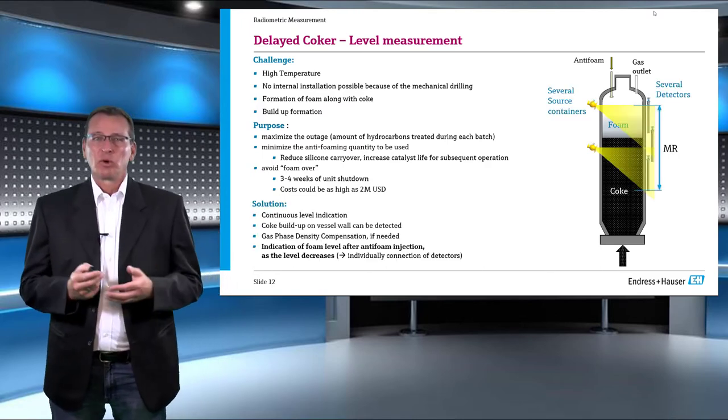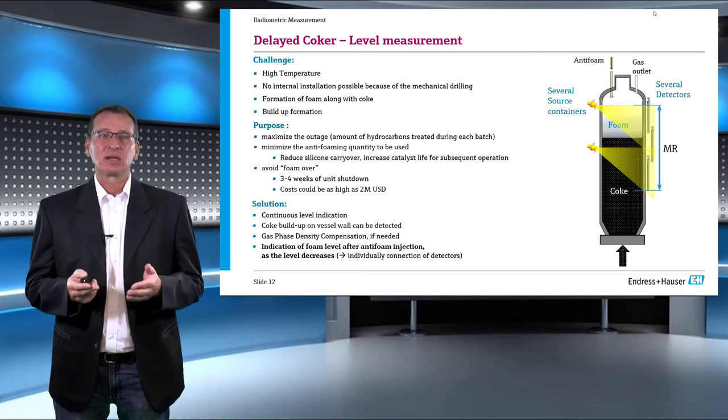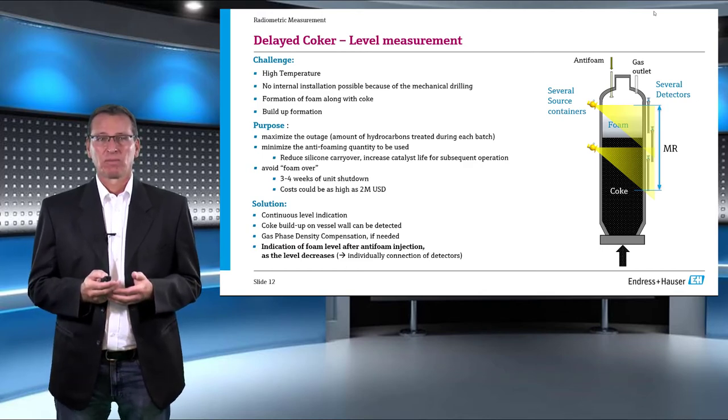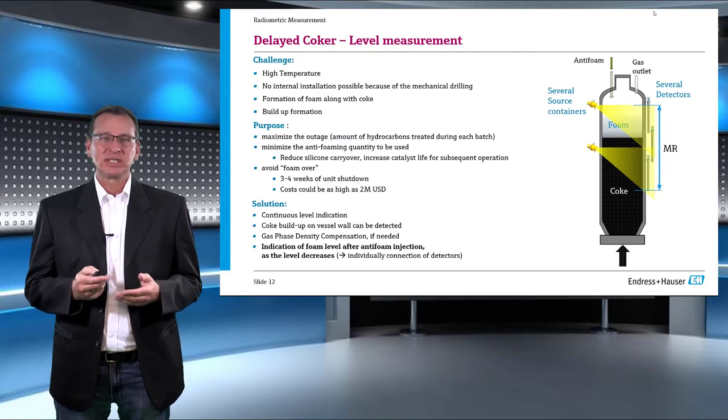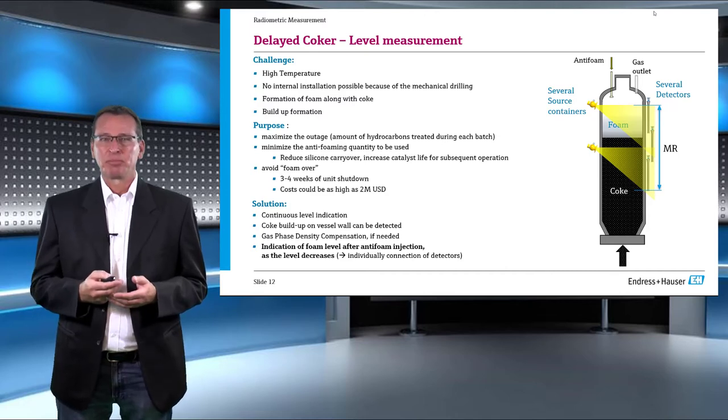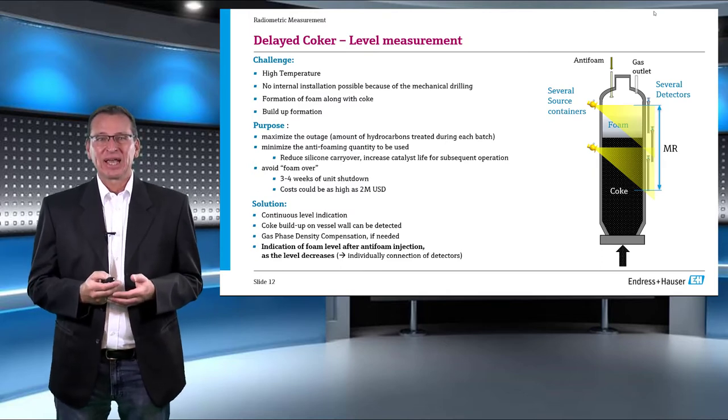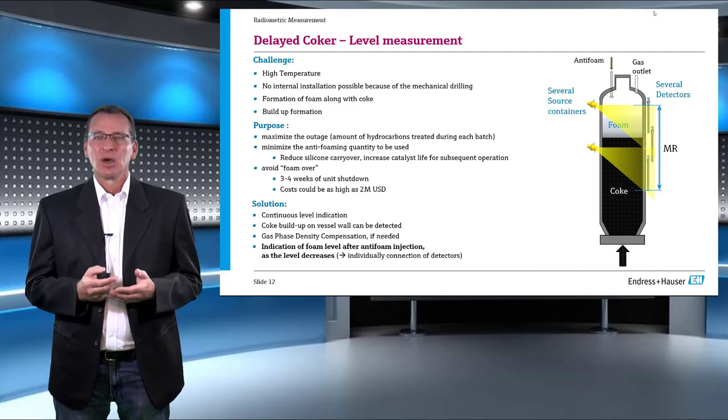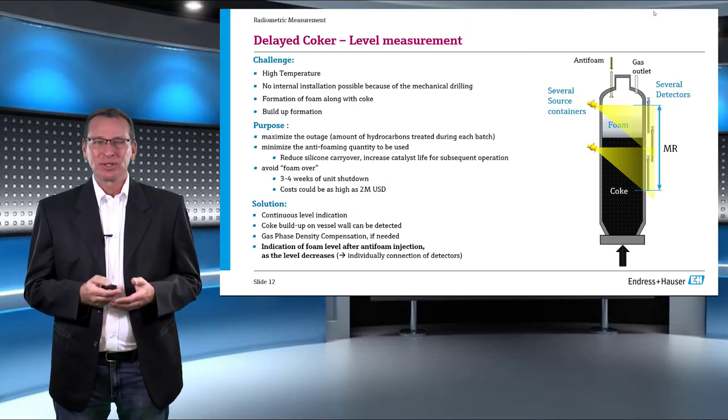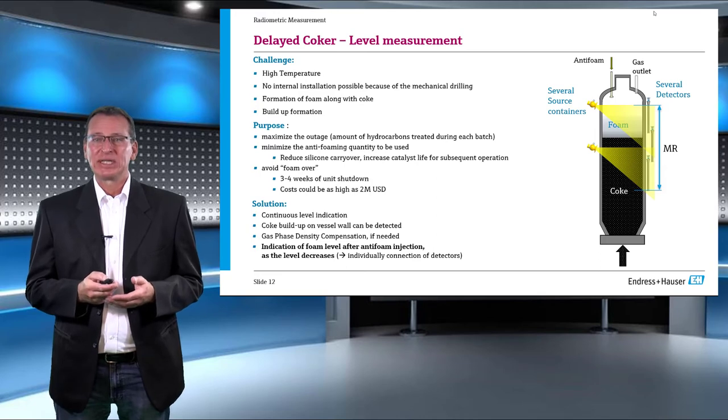So how do we solve the problem? We mount several source containers depending on the measuring range on one side of the vessel and detectors mounted vertically on the other side. The advantages of this solution is that we get continuous level indication across the measuring range. During the filling, cleanup or buildup that are not cleaned can be indicated clearly. As an option, gas phase density in the vessel can be compensated, or this can alternately be used as a point level detector as well. Finally, the most important feature: indication of collapse and foam level when anti-foam injection starts. I would like to elaborate this point in detail in the next slides.